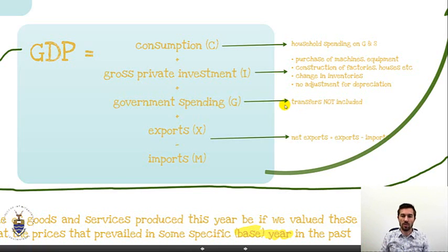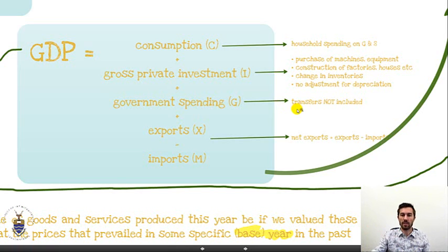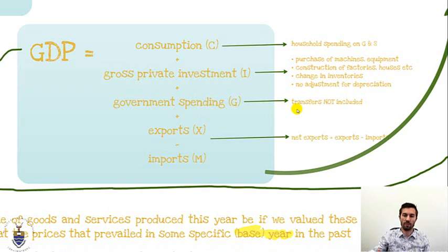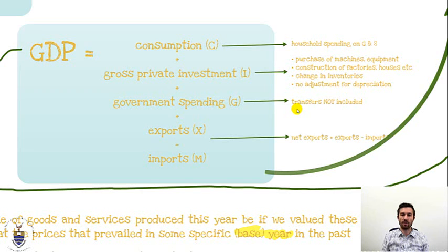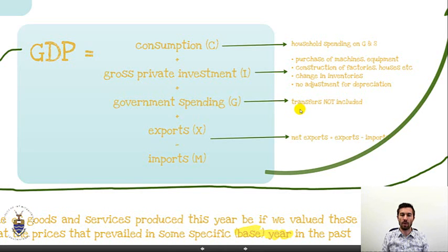There's no production that happens. When government provides a social grant, that social grant is not in lieu of some production that is going to happen or has happened. It's simply a transfer of value from one party to another. There's no production that happens. Therefore it cannot be part of GDP because GDP requires production.